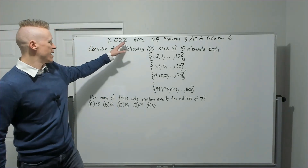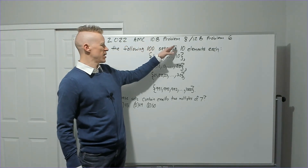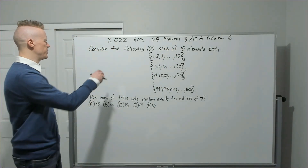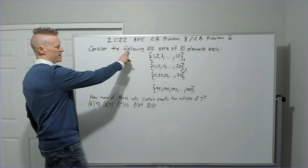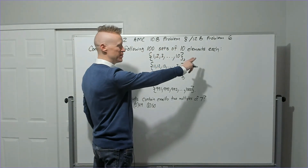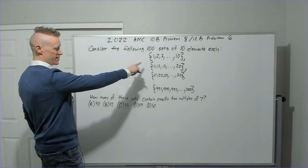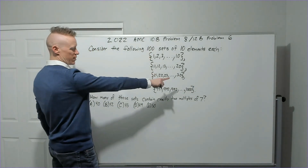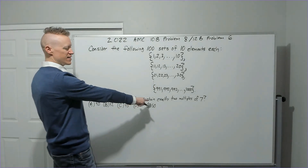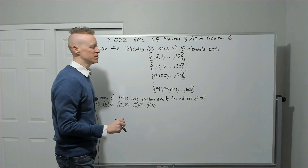Continuing with the 2022 10B, problem number 8 — also problem number 6 from the 12B. Consider 100 sets of 10 elements each: {1 to 10}, {11 to 20}, {21 to 30}, ..., {991 to 1000}. How many of these sets contain exactly two multiples of seven?